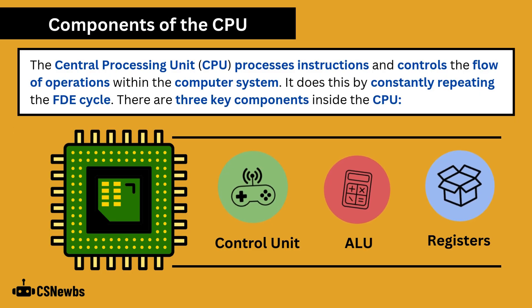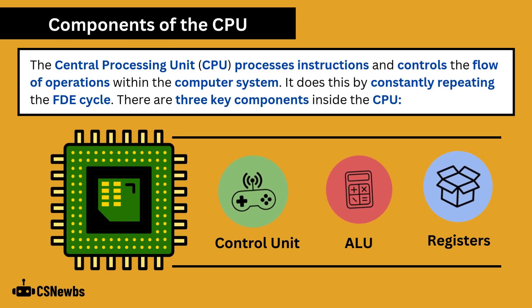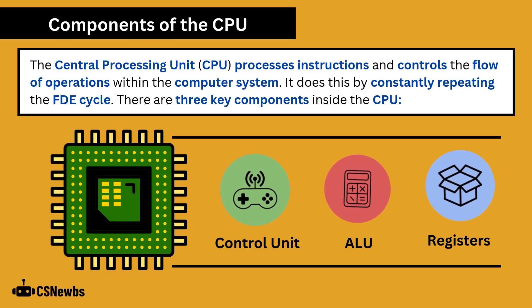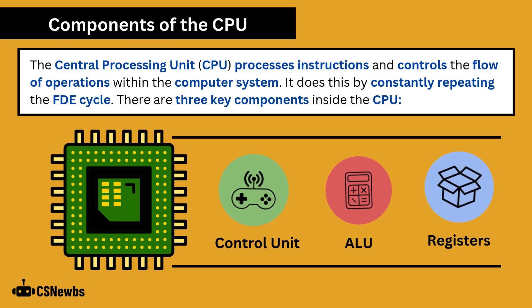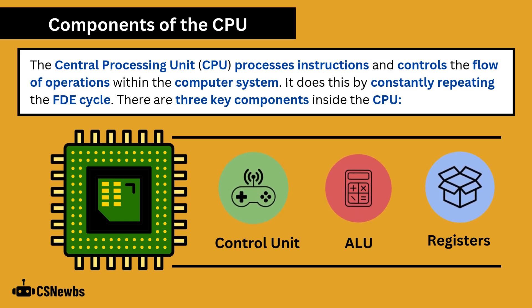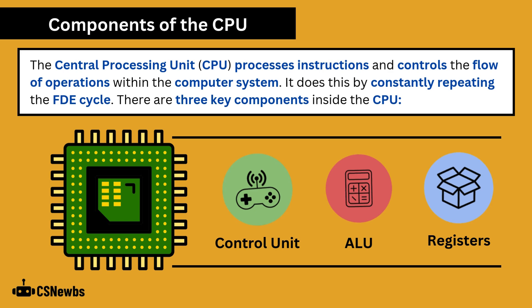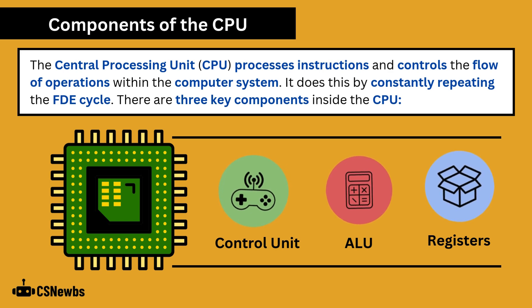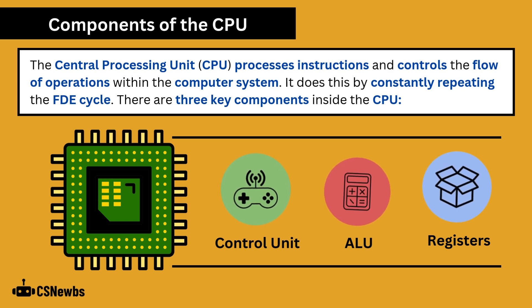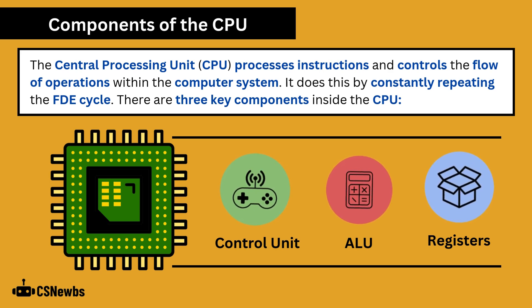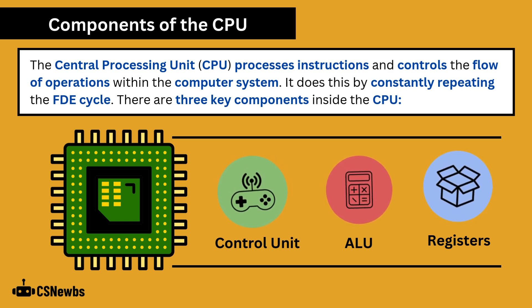The central processing unit, or CPU, processes instructions and controls the flow of operations within the computer system. It does this by constantly repeating the fetch-decode-execute cycle. There are three key components inside the CPU: the control unit, the ALU, and the registers.